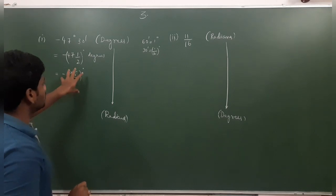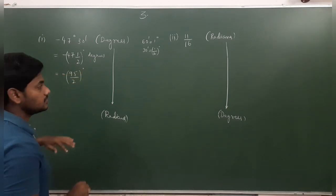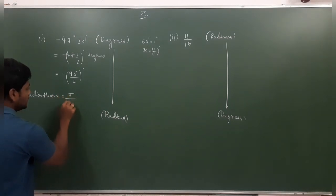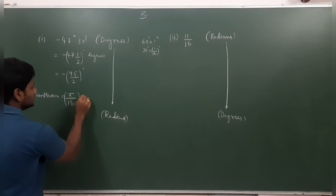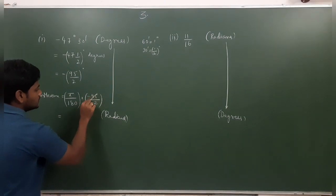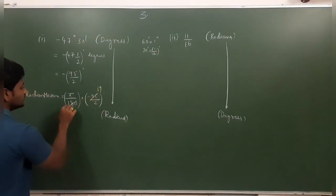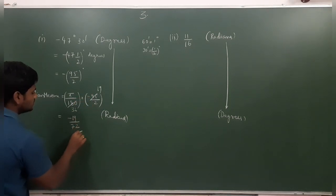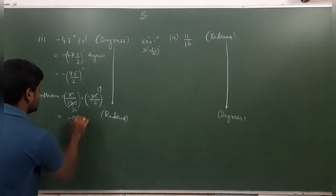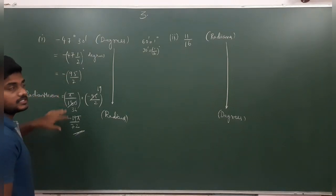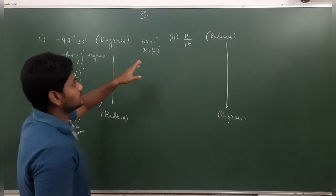Now to convert to radians, we use the radian measure formula: multiply by π/180. So it becomes π/180 × (−95/2), which simplifies to −95π/36, and further to −19π/72 radians. Remember, if a minus sign is present, carry it through every step.